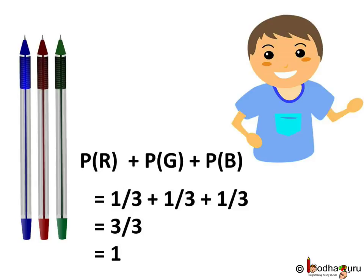Now if we sum up the probabilities of all different possible events we get 1. So in this case, P(R) + P(G) + P(B) = 1/3 + 1/3 + 1/3 = 3/3 = 1.